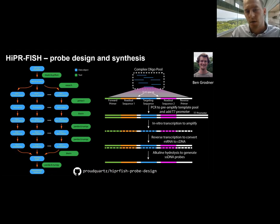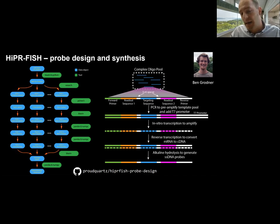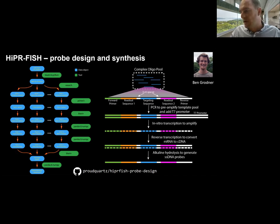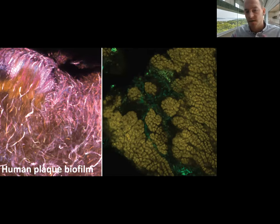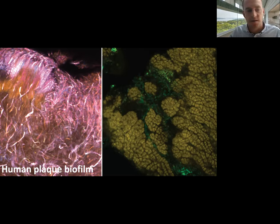We amplify this pool by first ligating a T7 promoter, doing in vitro transcription, then reverse transcription to create an amplified pool of single-stranded DNA probes for HyperFISH. These are examples of a human plaque biofilm from two different regions. You can see different cells with very different morphologies and wide-ranging cellular shapes, with different colors corresponding to different species.